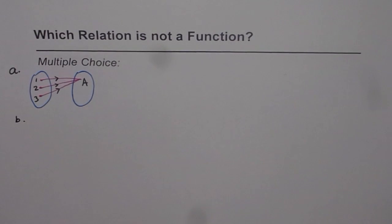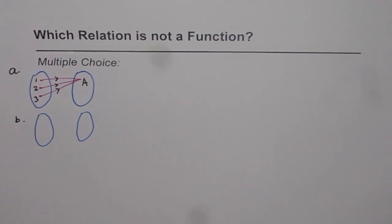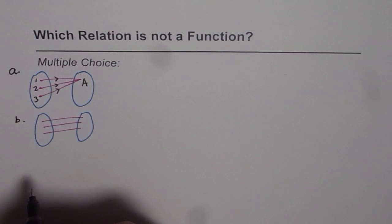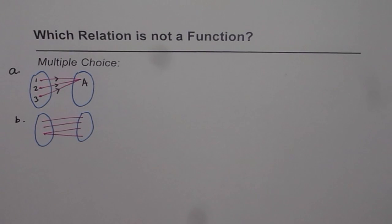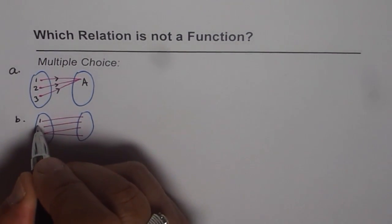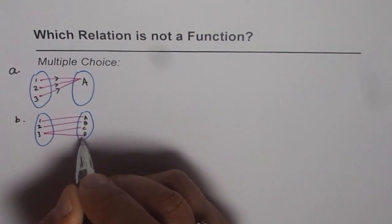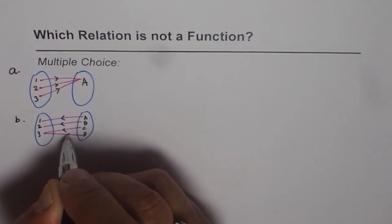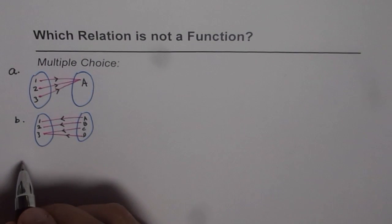Here is one more choice. This time I'll make a similar mapping diagram but with a different arrangement. Again I'll write some numbers: 1, 2, 3 on one side and A, B, C, D on the other side, with arrows connecting them. You need to figure out whether this relation is a function or not.